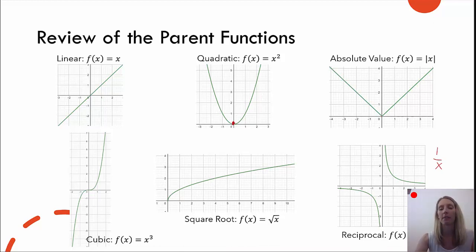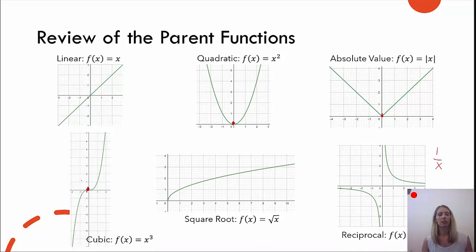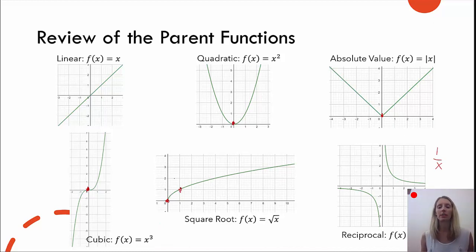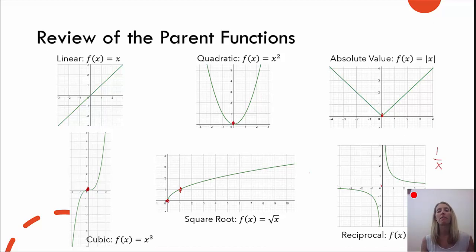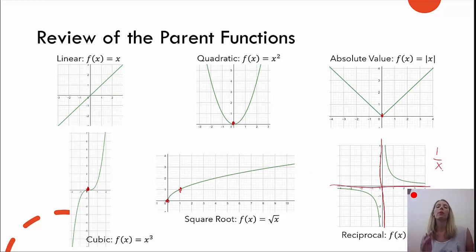The cubic function also has something special at zero-zero, where the graph kind of shifts direction. Other key points on the cubic: zero-zero, one-one, and negative one-negative one. For the square root, the function starts at zero-zero and also contains the point one-one. The reciprocal function does not have zero-zero — the graph actually avoids the axes. We want to look for where the graph is getting closer and closer to those lines. Key points to keep in mind for the reciprocal are one-one, but also one-half-two, or two-one-half.